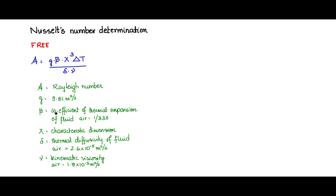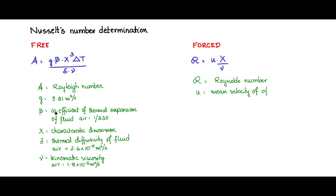For forced convection, the Reynolds number is used: R equals u times X divided by nu, where u is the mean velocity of the forced fluid — that is, the mean velocity of airflow produced by a fan or blower. X is again the characteristic dimension, and nu is the kinematic viscosity of the fluid.